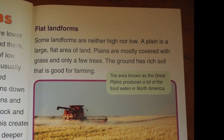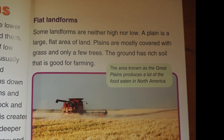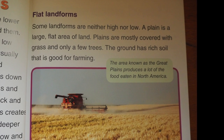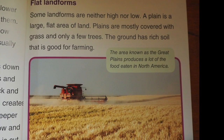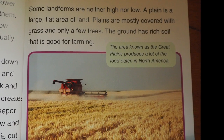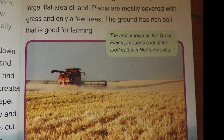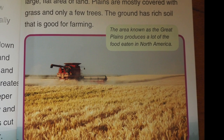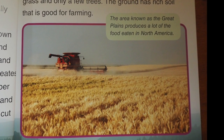Some landforms are neither high nor low. A plain is a large, flat area of land. Plains are mostly covered with grass and only a few trees. The ground has rich soil that is good for farming.